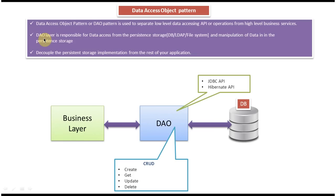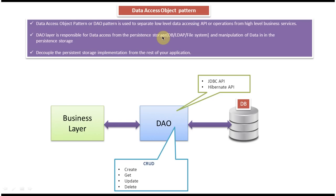The second key point is that the DAO layer is responsible for data access from the persistent storage. This means it is responsible for getting records from the database table. Persistent storage can be a DB, LDAP, or file system.